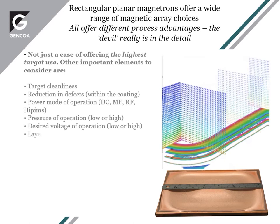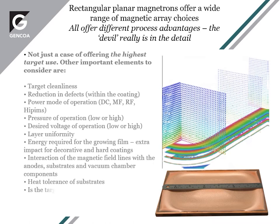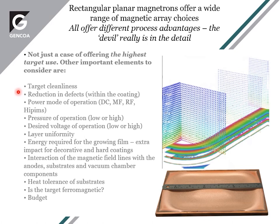In terms of magnetic design for planar magnetrons there's a lot of flexibility, but also a lot of detail to be looked into if you want to optimize the various aspects involved in sputtering. Target cleanliness is one element — that means the target is in a state which is clean, reducing defects. Redeposit on a target can produce arcing or dust which can find its way into the coating.